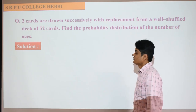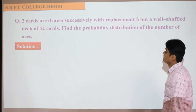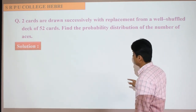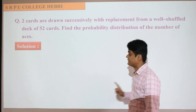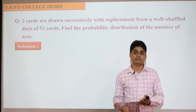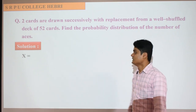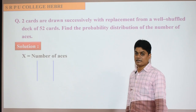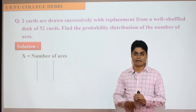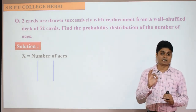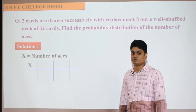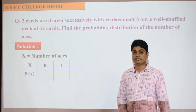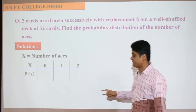Two cards are drawn successively with replacement from a well-shuffled deck of 52 cards. Find the probability distribution of the number of aces. Two cards are drawn with replacement — after selecting one card, we put it back in the pack of 52 cards. So x here is the number of aces. The possible outcomes for x are 0 aces, 1 ace, and 2 aces — so x takes values 0, 1, 2. The probability distribution must be written in table form.